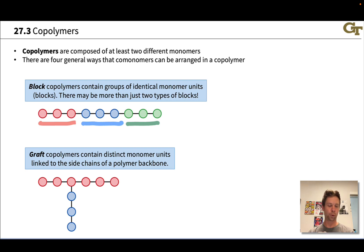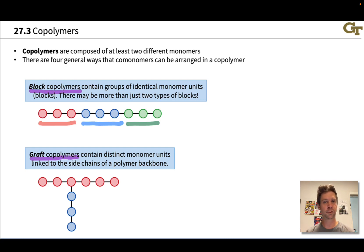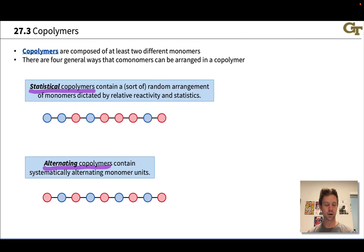So these are the four different ways that we can think about copolymer structure: graft copolymers, block copolymers, alternating copolymers, and statistical or random copolymers.